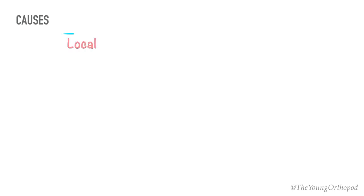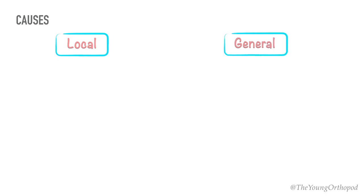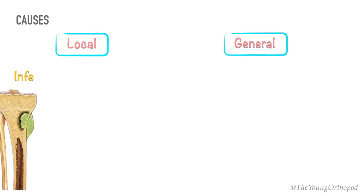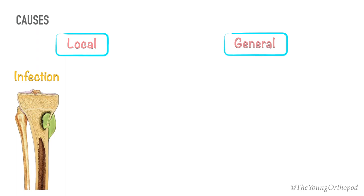The causes of pathological fracture are numerous and varied. The pathology may be localized to one part of the bone or it may be generalized. The localized causes include chronic infection and tumor deposit.